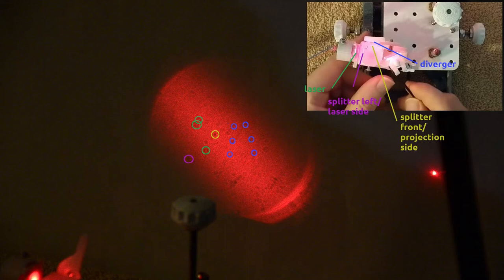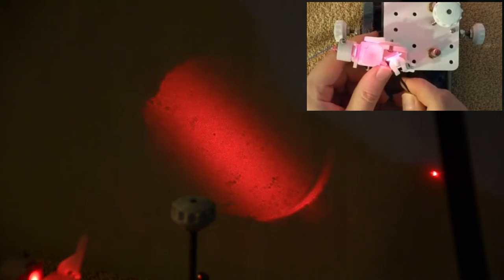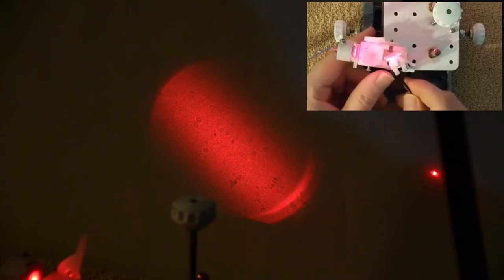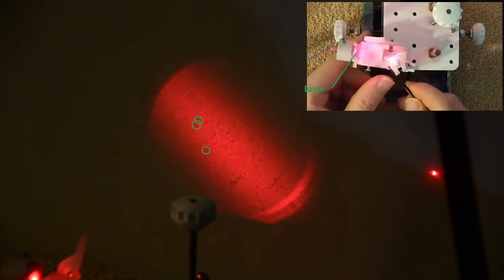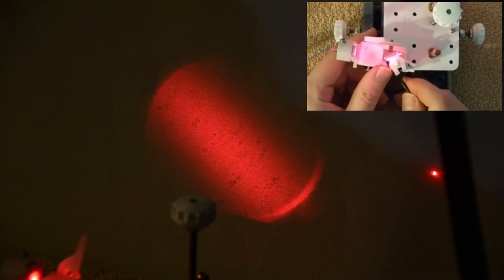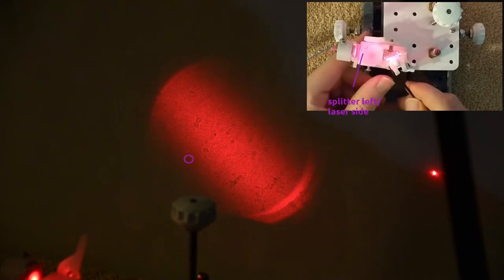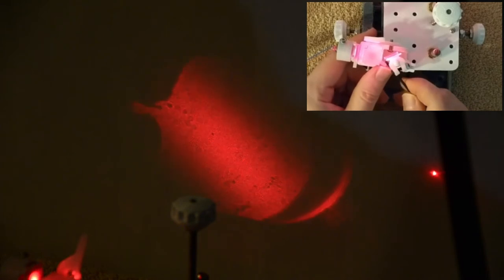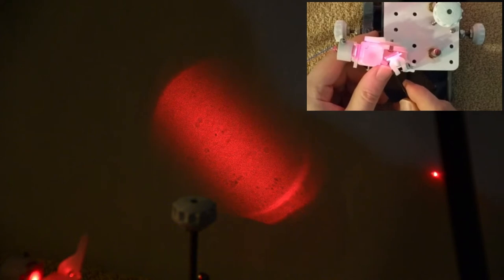When I rotate the splitter clockwise as seen from above, dust on the projection side of the splitter, the side towards the paper I taped on the wall, those spots move not at all or they move the least amount. Dust spots on the diverger move to the right. Spots on the laser move to the left. Spots on the laser side of the splitter move to the left, but faster than the laser spots. What I just said is summarized in the description below this video, in case you want to print out this bit of wisdom.